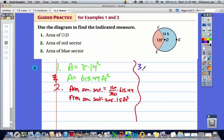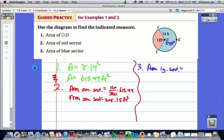Thirdly, we could also do this for the blue sector. Instead of 120, this would be 240 once we subtract 120 from 360. The area of the large sector will equal the fraction, which is 240 over 360, which reduces to two-thirds, times your area which is 615.44. Or you could just subtract the small sector from 615.44. Either way you do it will give you the correct answer. The area of the large sector is about 410.29 square feet.